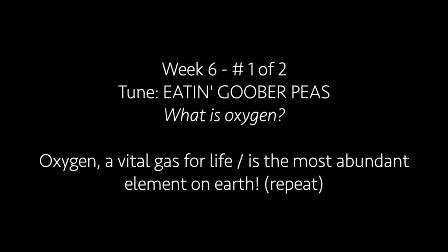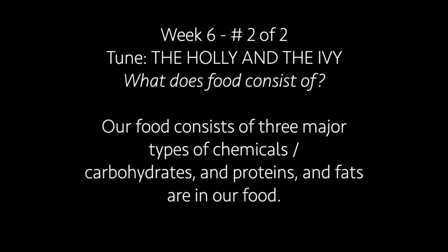Oxygen, a vital gas for life, is the most abundant element on earth. Our food consists of three major types of chemicals: carbohydrates and proteins and fats are in our food.